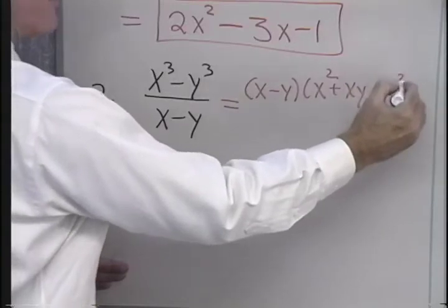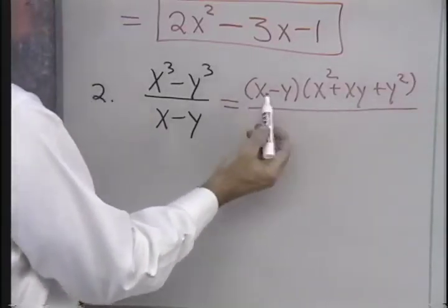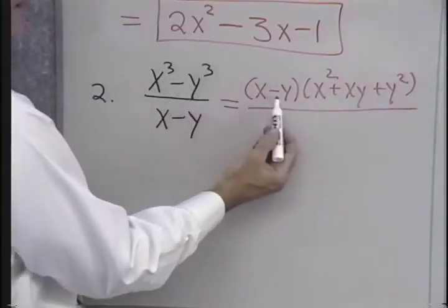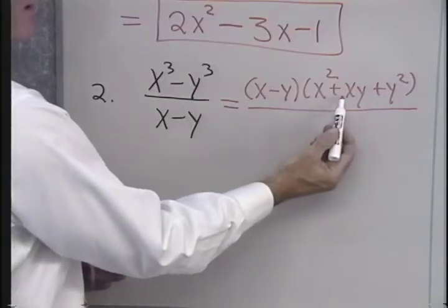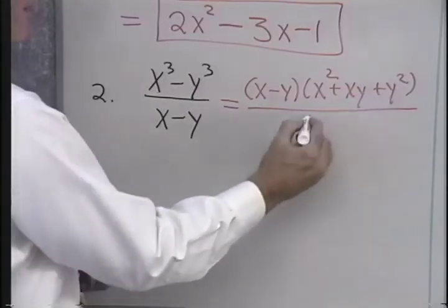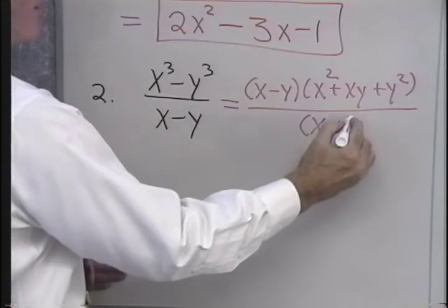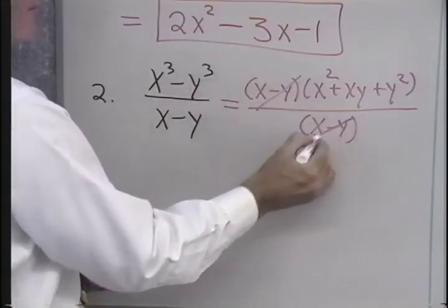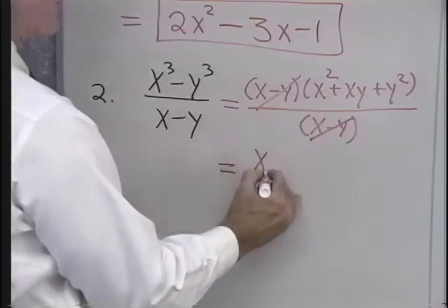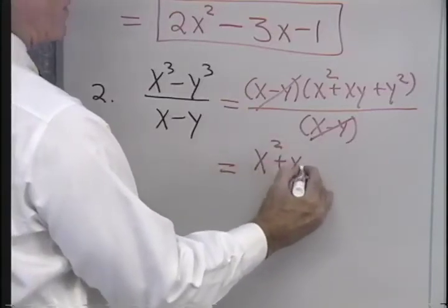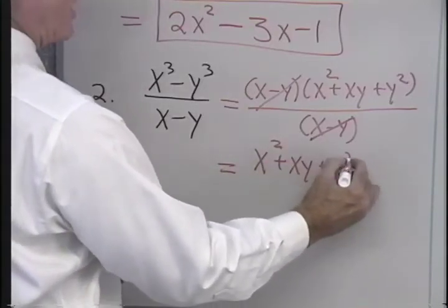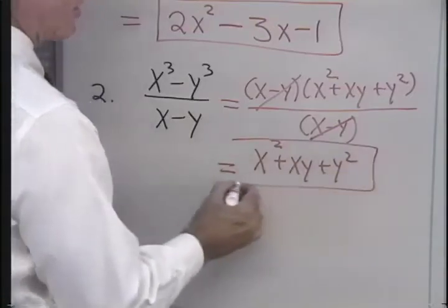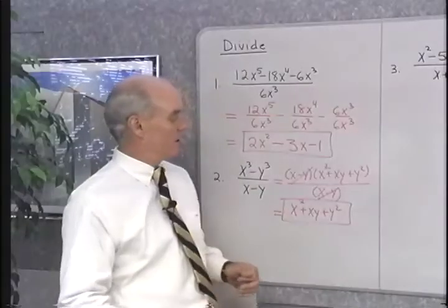So, remember, I've memorized this formula for factoring the difference of 2 cubes: x minus y, x squared plus xy plus y squared. And that's all over x minus y. Divide out those common factors, and I've actually done division with polynomials by using my method of reducing to lowest terms from the previous section.